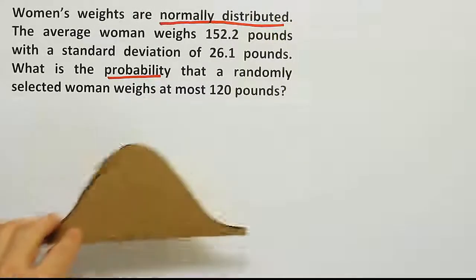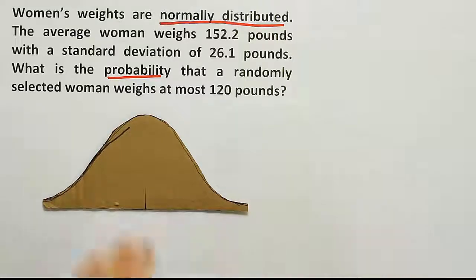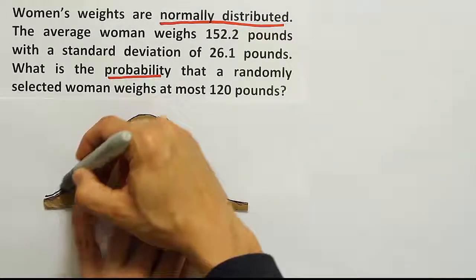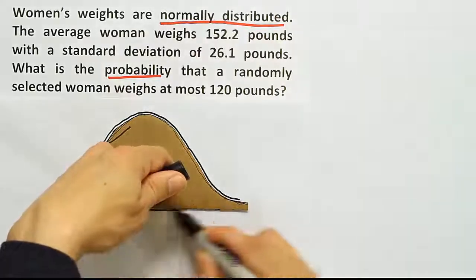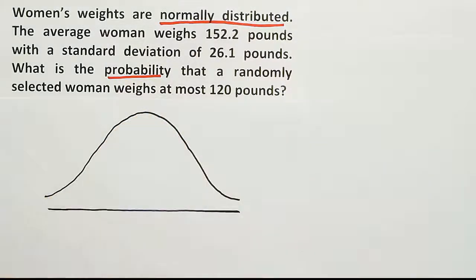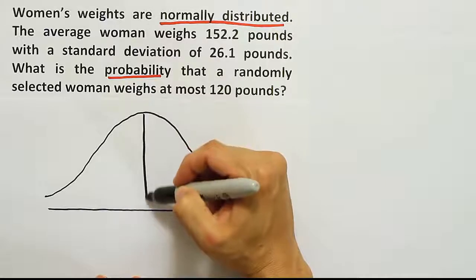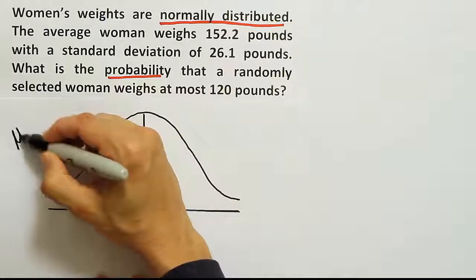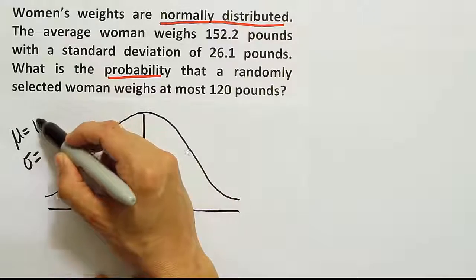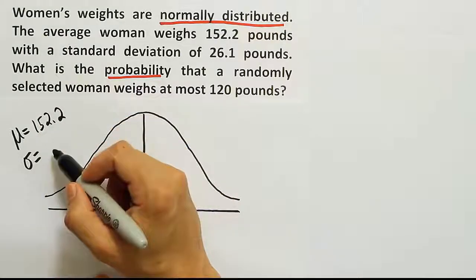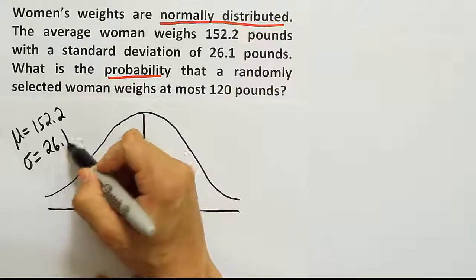I know it's normally distributed, so I'm going to draw my bell curve. I'll label the mean and standard deviation off to the left. The mean is 152.2.